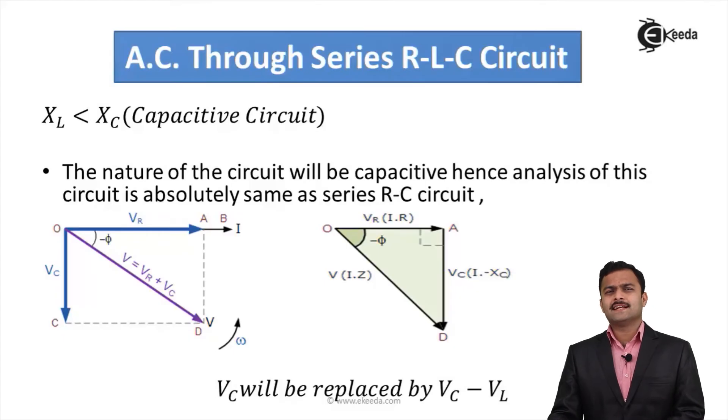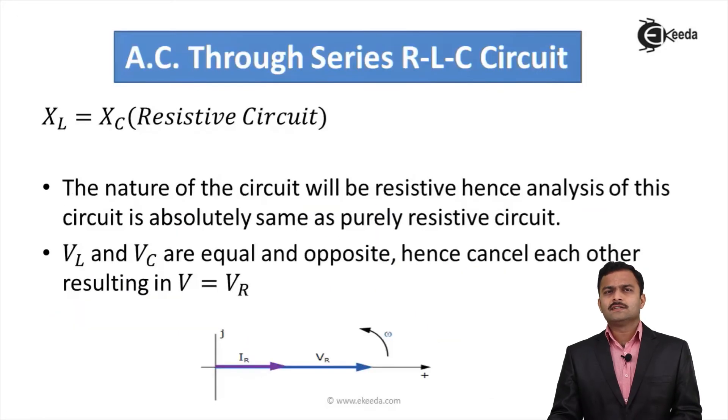Second case is suppose XC is greater than XL. Obviously, VC will be greater than VL. The nature of circuit will be capacitive. Whatever discussion we have done for phasor diagram, voltage triangle or impedance triangle, power triangle will be identical to that of capacitive circuit, that is series RC circuit. Only thing is that VC should be replaced by VC - VL. I have shown over here a phasor diagram that is identical to RC circuit, voltage triangle that is also identical to RC circuit because here circuit will be capacitive in nature.